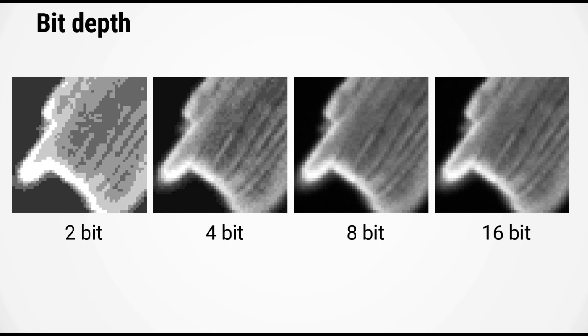An 8-bit image supports 256 different values and looks much smoother. The 16-bit image is even smoother, although we are now starting to reach the limit of what our vision can tell apart.